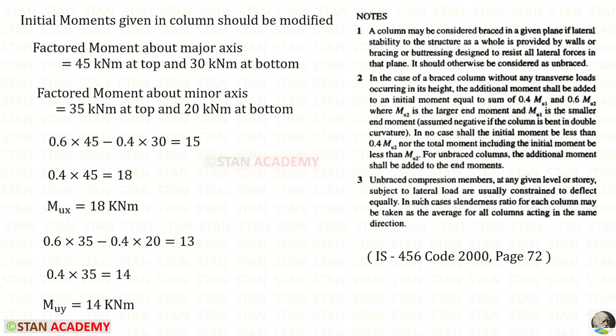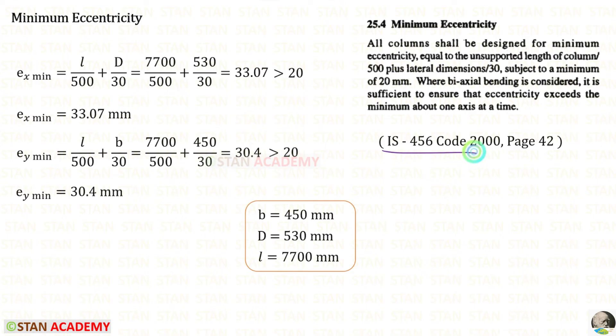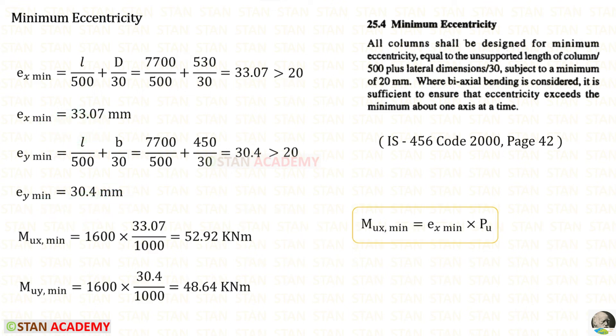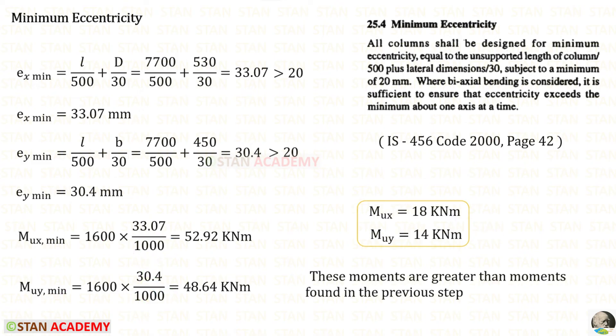One more time, we have to find the moments using the eccentricity. Then we have to take the maximum value. Let us see how. In this code book, we have to open page number 42. We can write the formula for minimum eccentricity. The unsupported length upon 500 plus lateral dimensions upon 30, and subject it to a minimum of 20. In these two, we have to take the maximum value. So for EX minimum, we will have this. For EY minimum, we will have this. Now we can find these two moments using this formula. PU, we know 1600. To convert millimeter into meter, we are dividing that by 1000. In the previous step, we have calculated these two. We have to compare these two and these two. We have to take the greater moments. These two are greater than these. We have to proceed with these two moments.